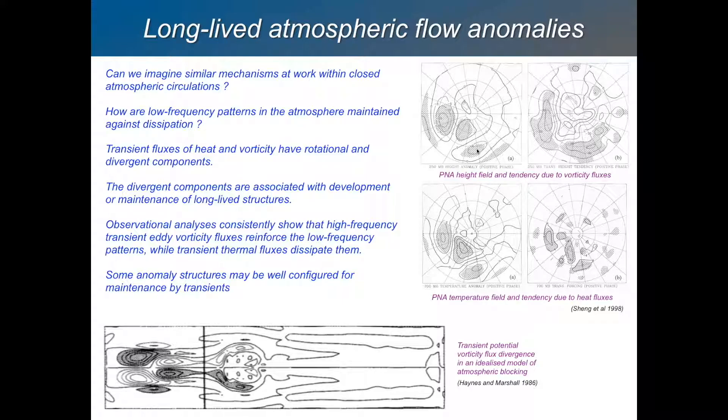It's a very important feature of the low-frequency variation of the atmosphere, that it very often finds itself in this sort of configuration, either positive or negative: low, high, low. The question is, does that get dissipated by the transient eddies, or does that get augmented by the transient eddies?